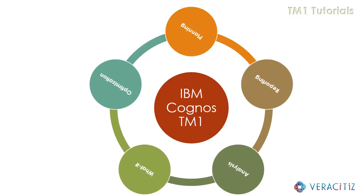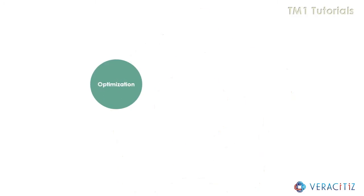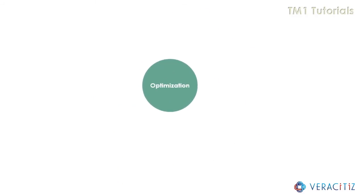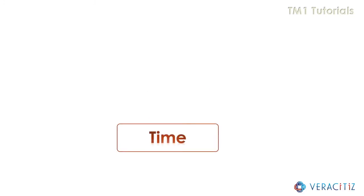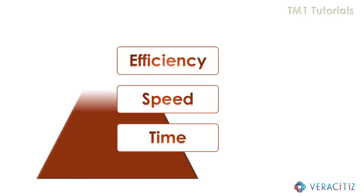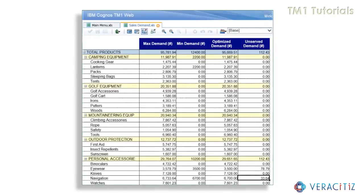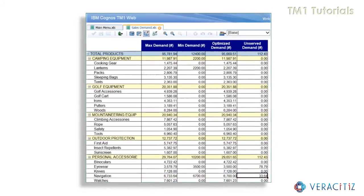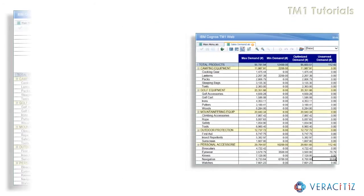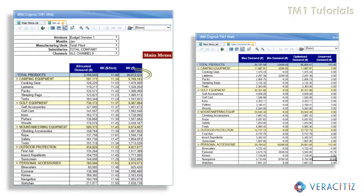This is the unique feature of the application, as it captures all the niche specifications and has been built taking into consideration the time, speed, and efficiency quotient of the user. Thus, the sales demand view will reflect the optimized demand and the unserved demand with set combinations. Similarly, it will also show its impact over the net realization to the company.